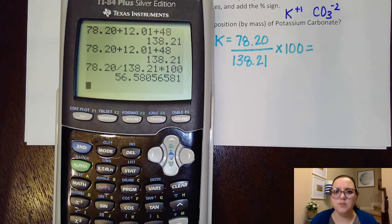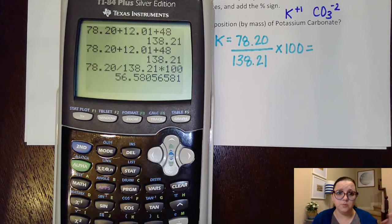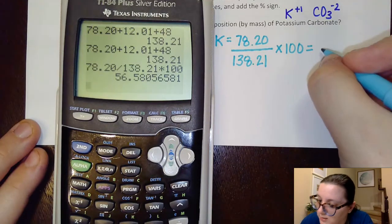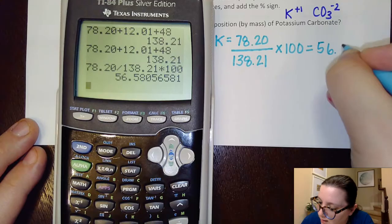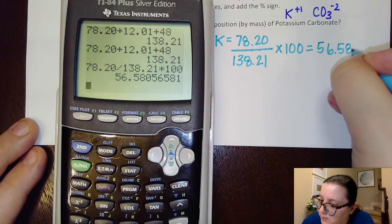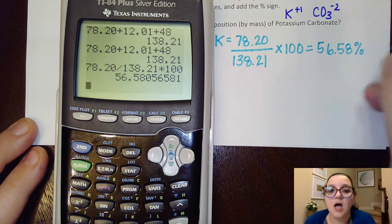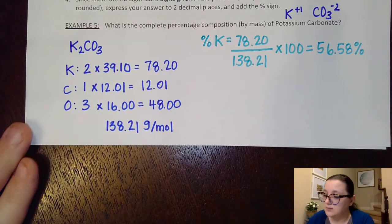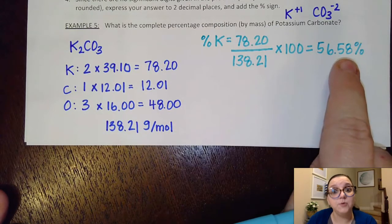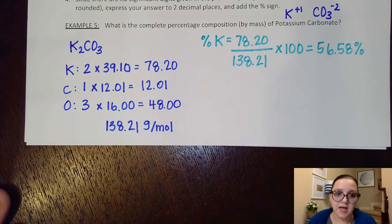So when I report these percentages, I'll usually do at least one, if not two places past the decimal. I'm not usually pretty picky on that. I would just at least show one or two places past. So I will go ahead here and write 56.58, and that is going to be a percent. So that means out of the total molar mass, 56.58% of it came from just the potassium.